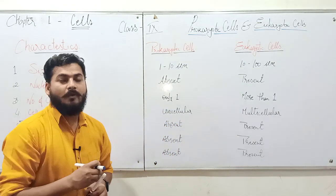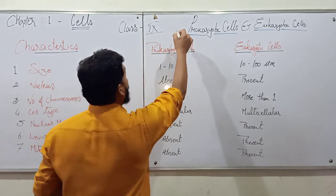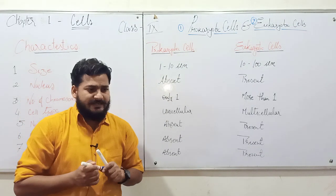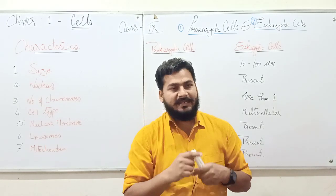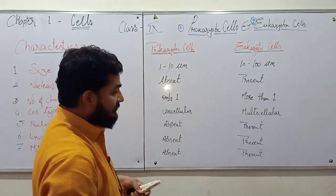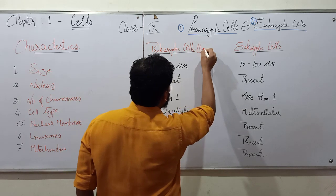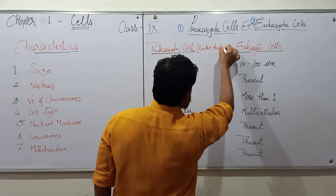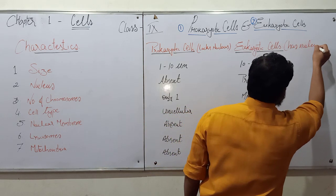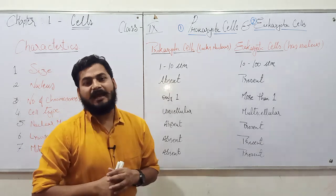Now on the basis of characteristics we are going to categorize cells in two forms. The first being the prokaryotic cell and the second being the eukaryotic cell. These are two types of cells which we basically define on the basis of presence or absence of nucleus. The prokaryotic cell is the one which lacks nucleus.